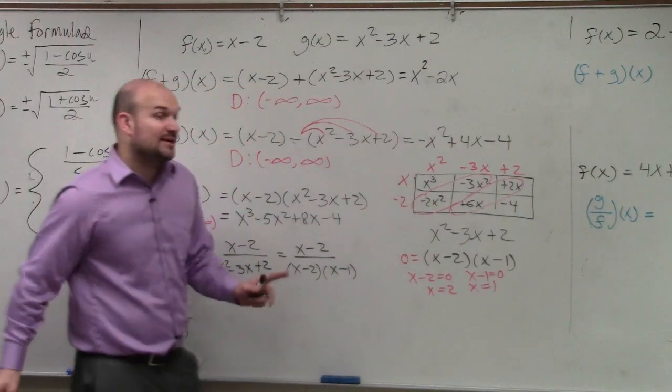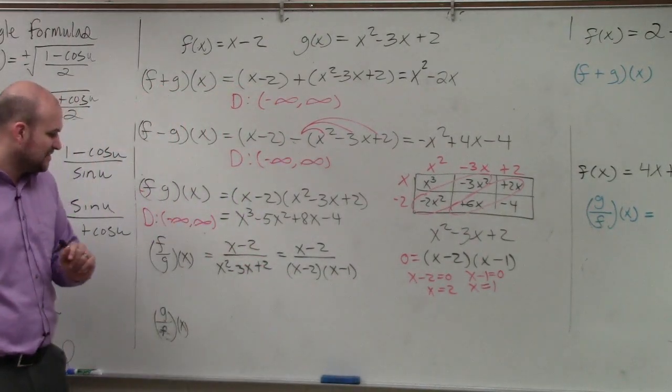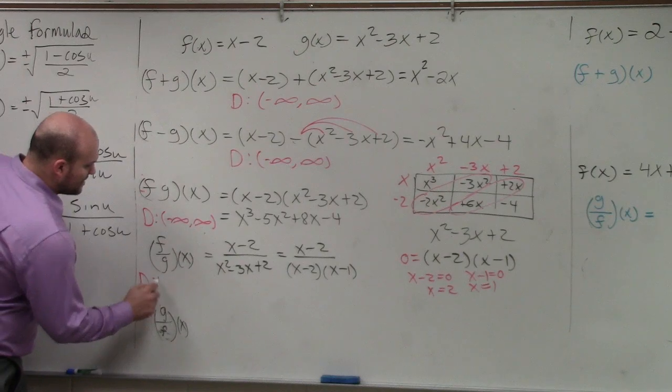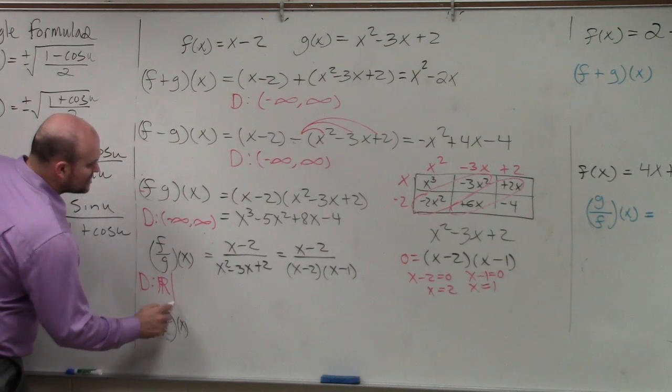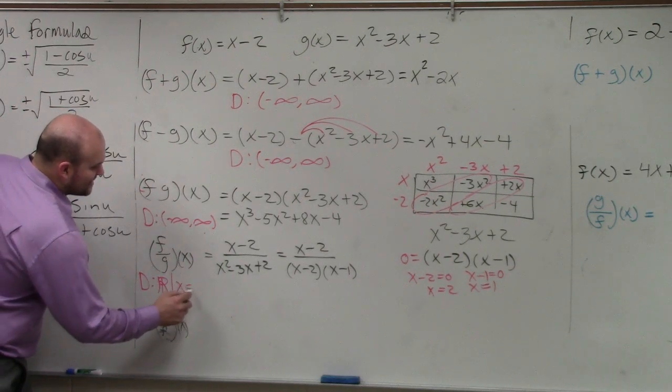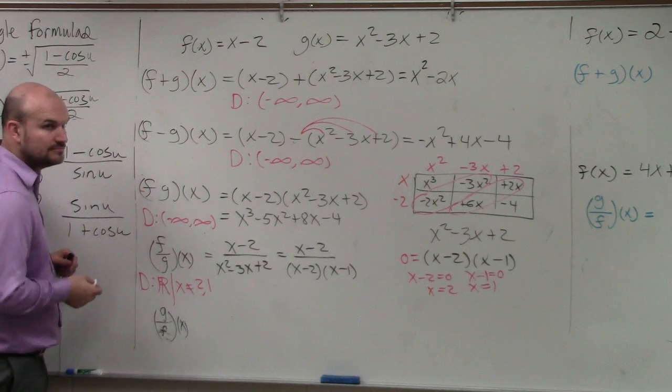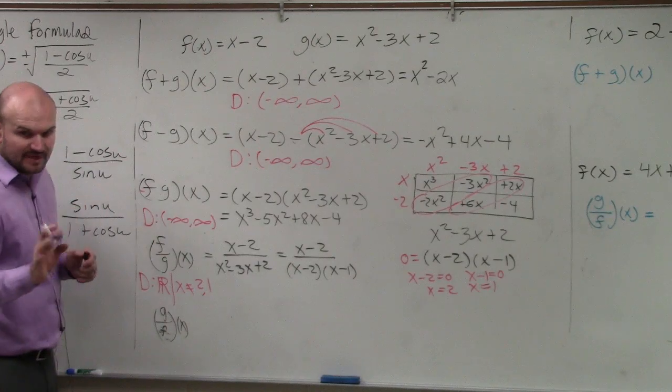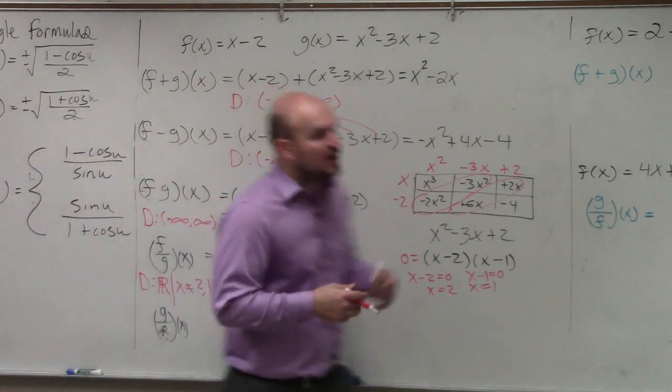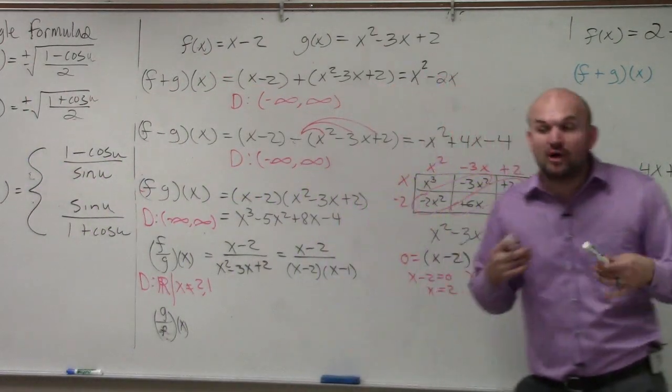Well, when my denominator equals 0, that's not going to be in my function. So therefore, my domain is going to be all real numbers such that x cannot equal 2 or 1. That's how I write my domain. I'm not done yet. I haven't simplified it yet. So I just want to make sure I write the domain before I simplify it.